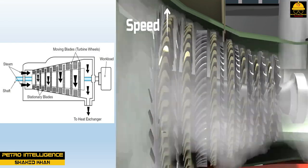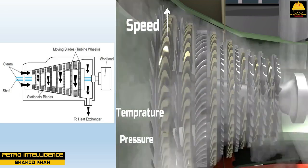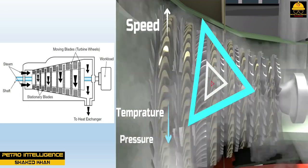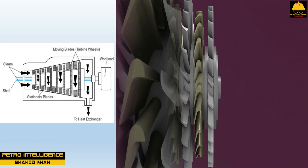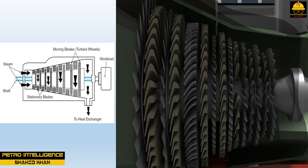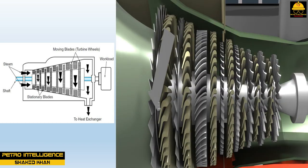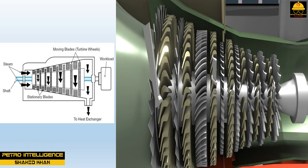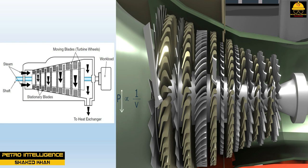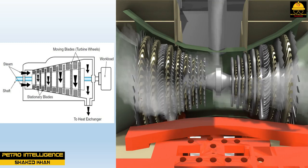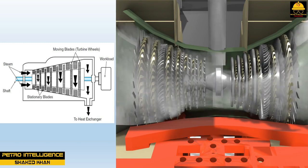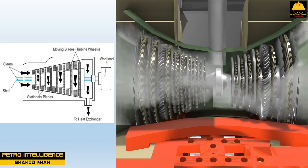As high pressure steam enters a turbine, it passes through a device called a nozzle. Nozzles restrict the flow and increase the velocity of the steam. The nozzle directs this high velocity steam against the blades of a paddle wheel, causing it to rotate. As the steam passes through alternate sets of fixed and revolving blades, it constantly expands as it moves along. The rotating paddle wheel is attached to a shaft, and the blading and shaft together make up the rotor. Impulse or reaction movement occurs as the steam strikes the rotor, converting steam energy into mechanical energy.